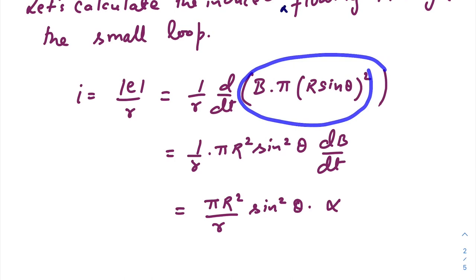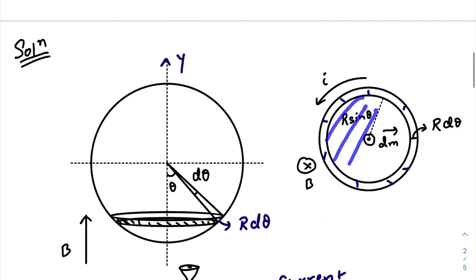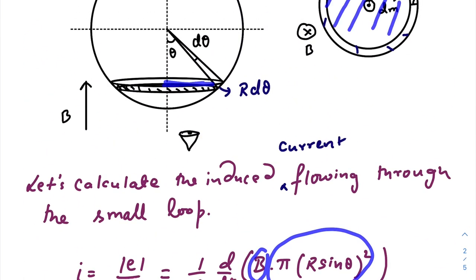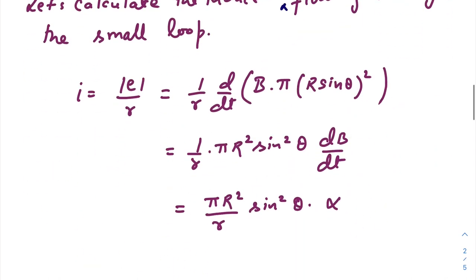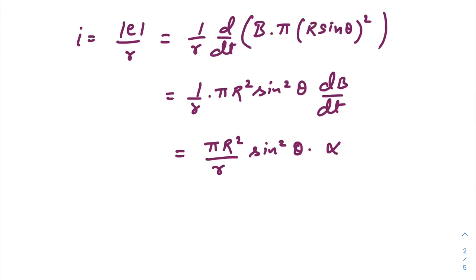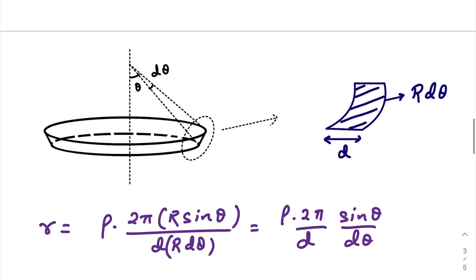So magnetic flux is B times the cross-sectional area, cross-sectional area of this loop that is pi R sine theta square. So smaller is the resistance of that small portion of this whole loop. We got dB/dt which is alpha which has been already provided in the question.